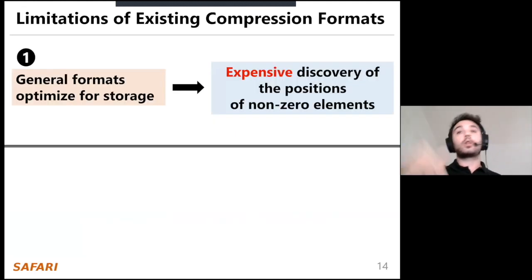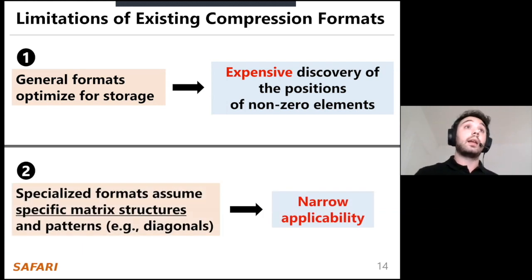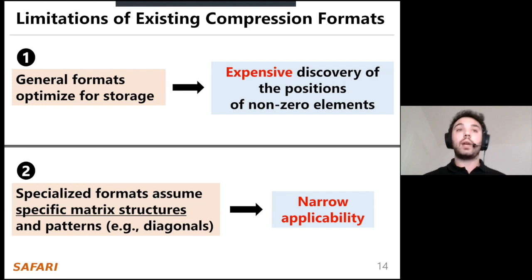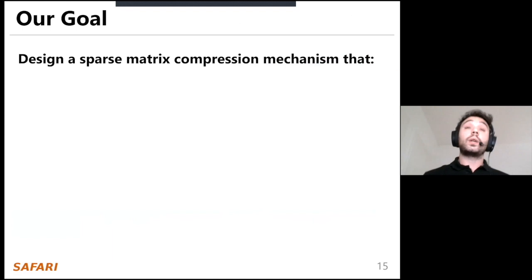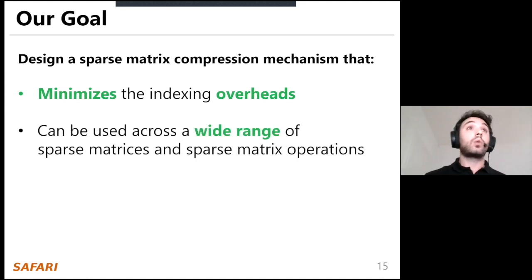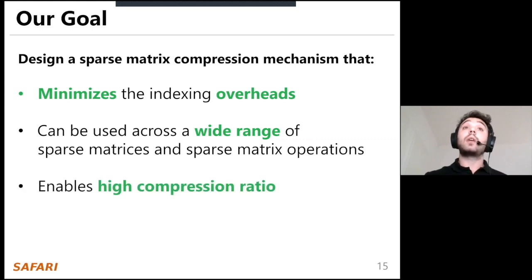It turns out that reducing the cost of indexing can significantly accelerate sparse matrix operations. The second class of existing formats are specialized formats that assume specific structures and patterns like diagonals. These are not general and offer narrow applicability — we cannot apply them to a wide range of sparse matrices. Our goal in this work is to design sparse matrix compression that minimizes indexing overheads, can be used across a wide range of sparse matrices and operations, and enables high compression ratios.